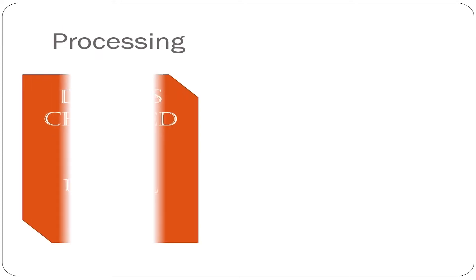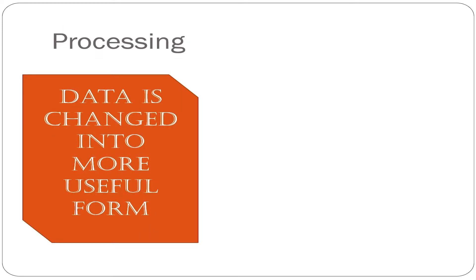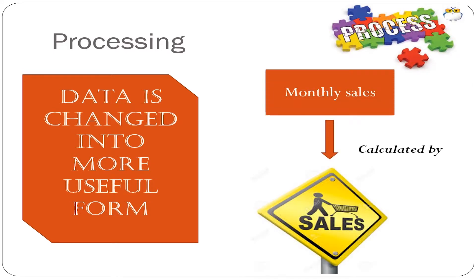Processing: In this step, data is changed to produce data in a more useful form. For example, paychecks may be calculated from the time cards, or a summary of monthly sales may be calculated from the sales orders.